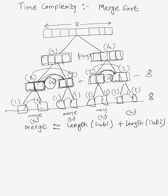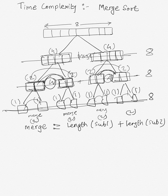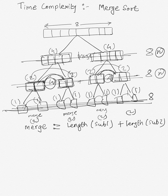We then perform a merge of the two remaining sorted arrays: 4 plus 4 equals 8 operations. So at every level the number of operations is 8. Generalizing this, if the length of the given input is n, the number of operations performed per level is n.